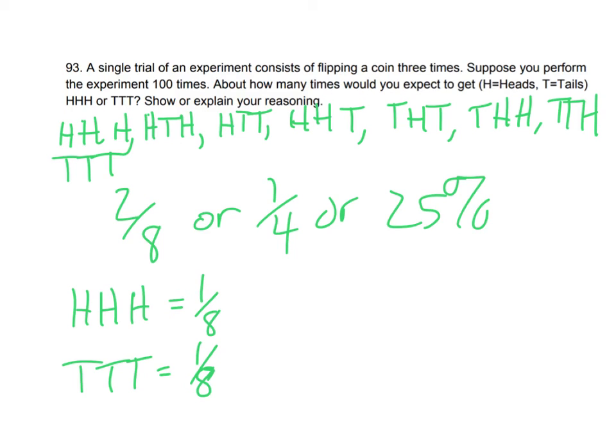I can only get heads, heads, heads, and tail, tail, tail two ways. And so two out of eight, that's one fourth or 25%. So really I would get that 25% of the time. And theoretical probability tells me that I should get that about 25% of the time. So if I do this a hundred times, I should get it 25 out of a hundred.